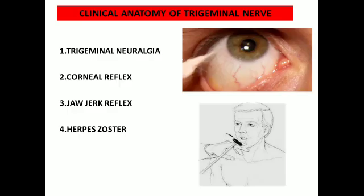Regarding clinical anatomy, trigeminal neuralgia involves severe, intolerable pain throughout the distribution of the trigeminal nerve. It can affect any one territory — ophthalmic, maxillary, or mandibular — and presents with intense pain of sudden onset.